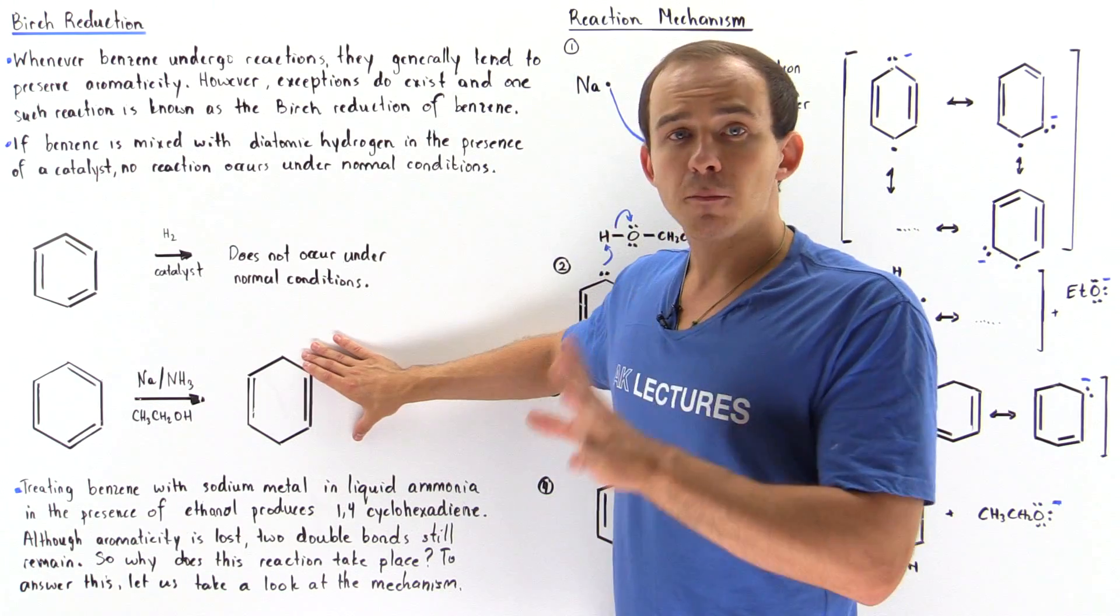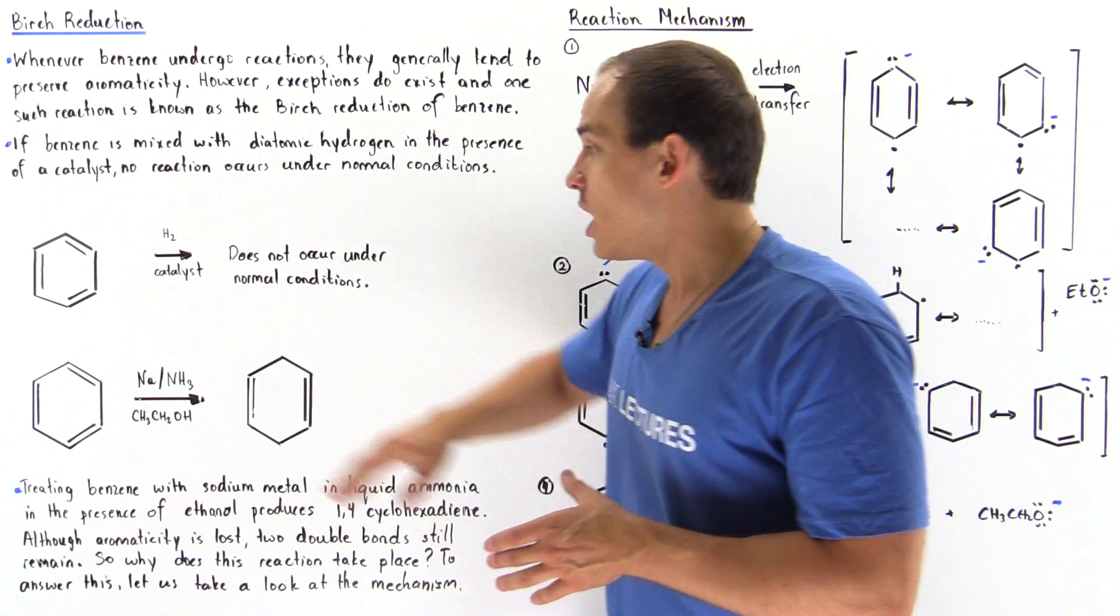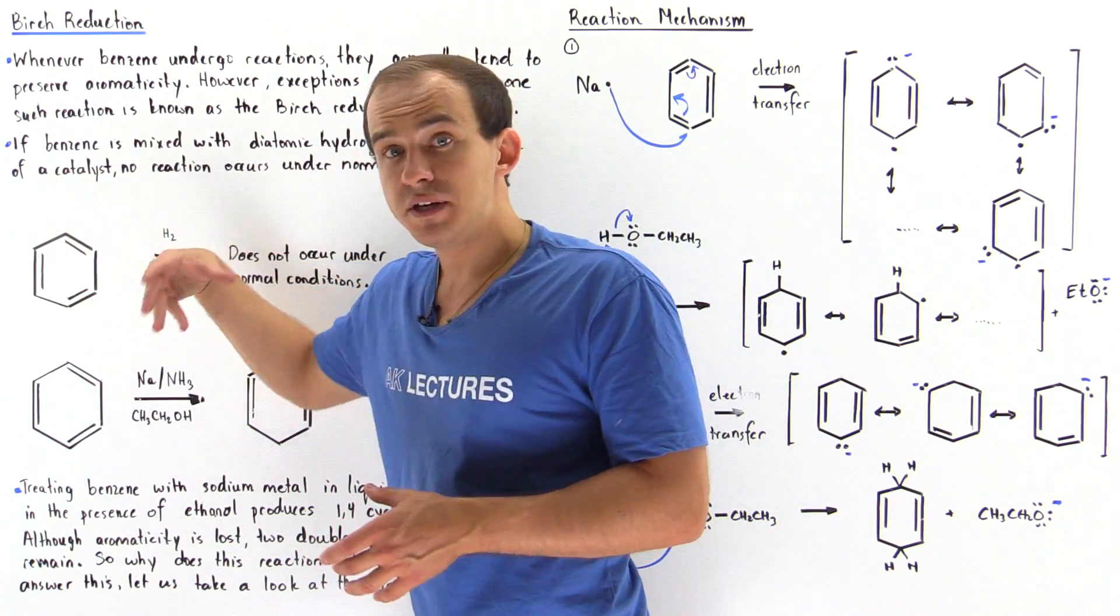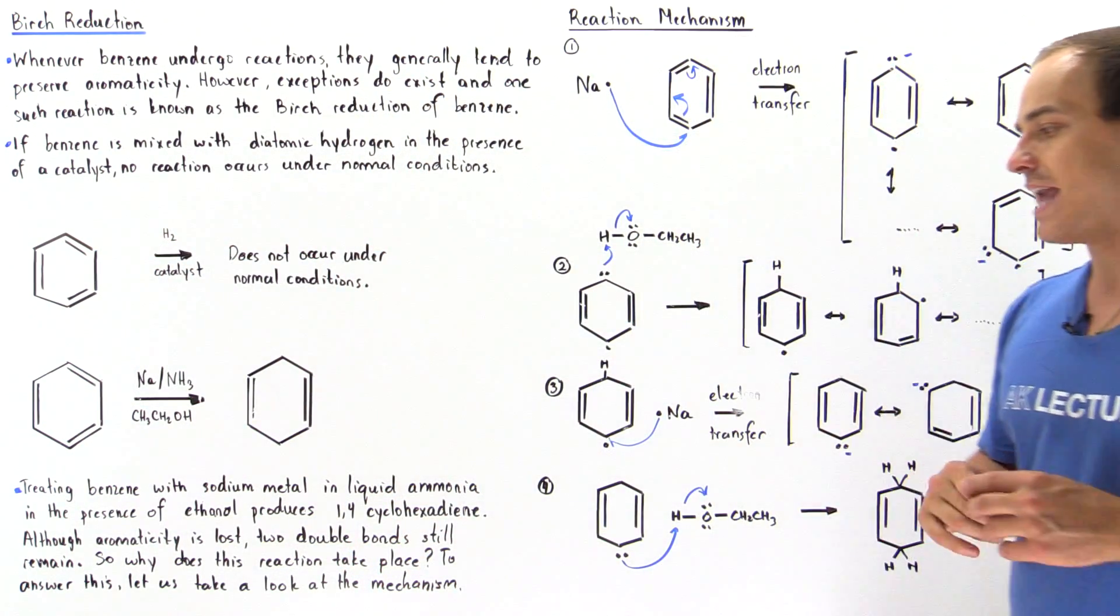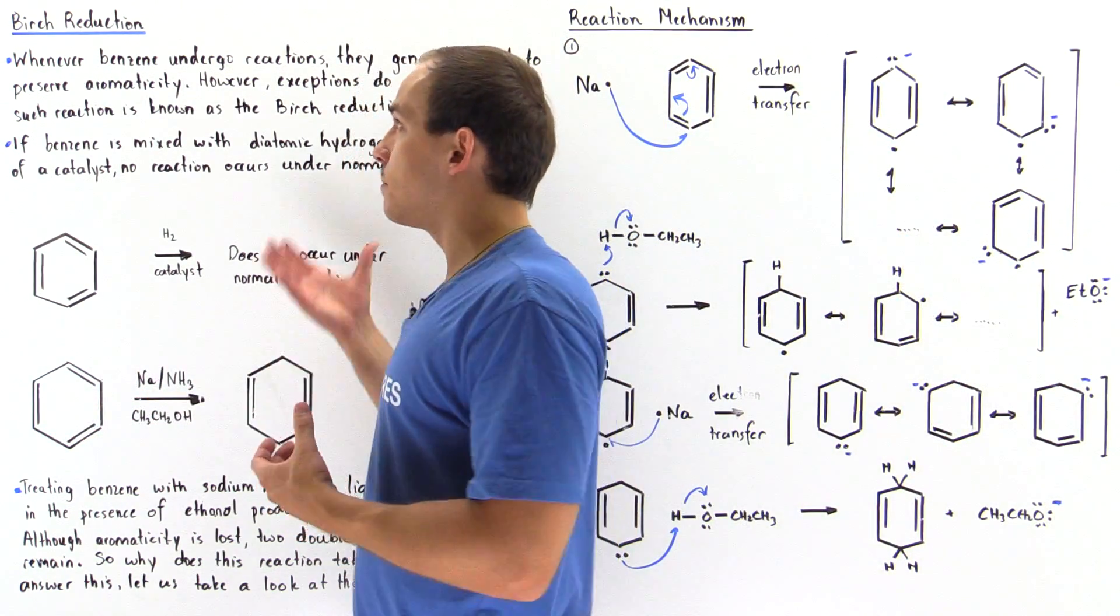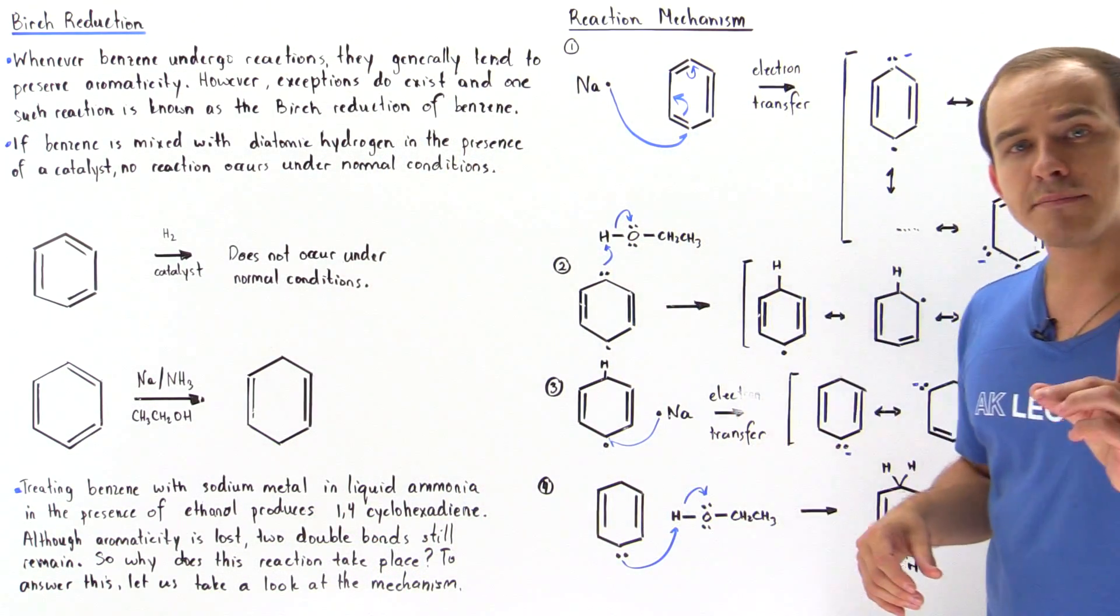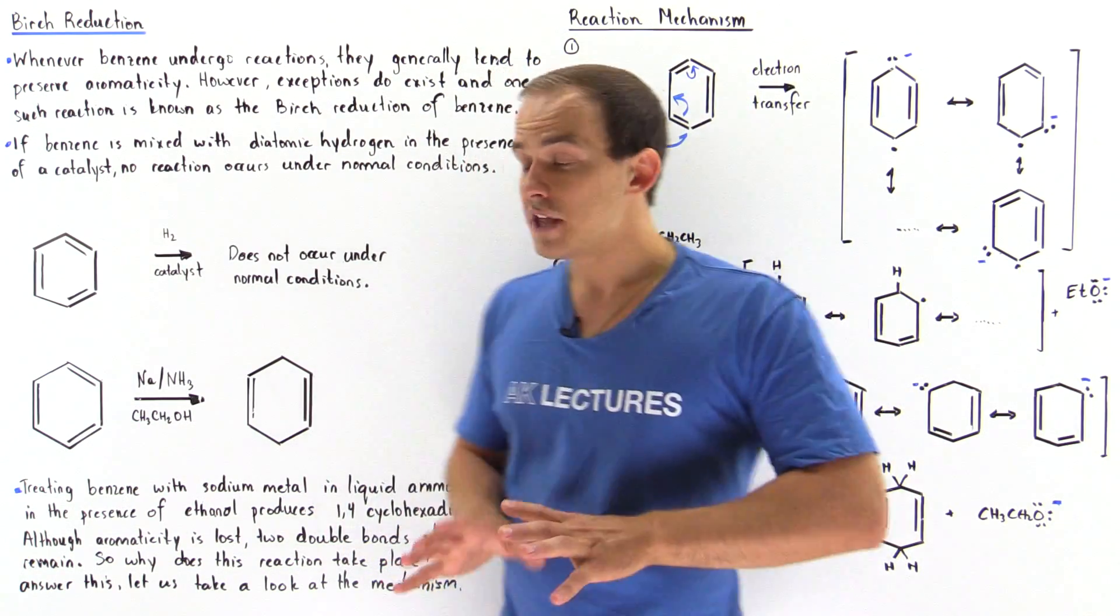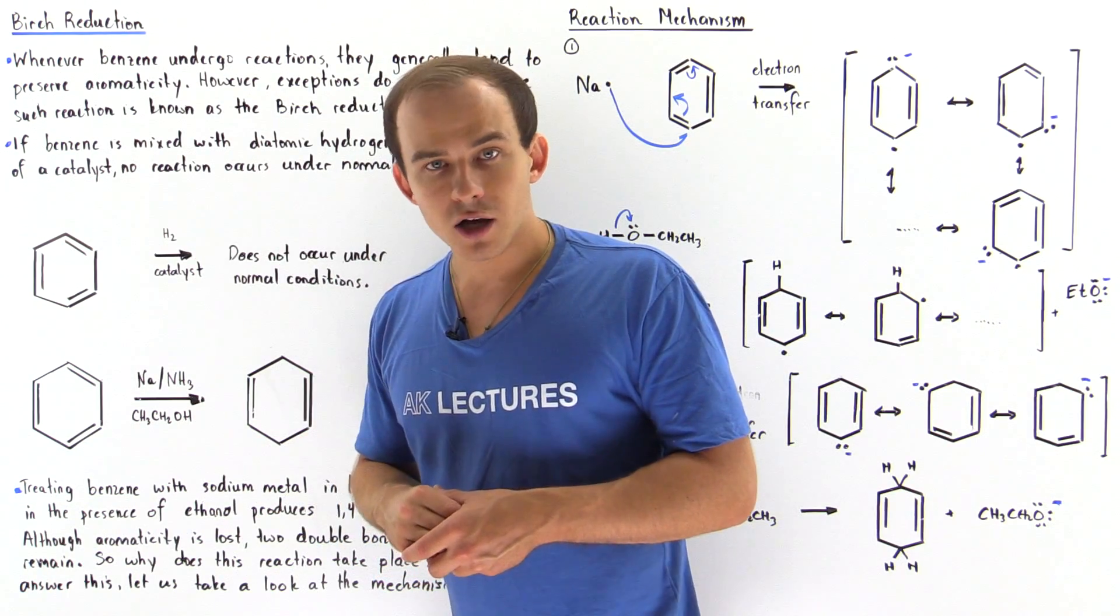We only really get rid of one pi bond. Although aromaticity is, in fact, lost, we still have our two pi bonds, versus in this case, all the pi bonds would be lost if this reaction were to actually take place. Now, to actually answer why this reaction, the Birch reduction reaction, takes place, we must examine the reaction mechanism and the intermediates involved in the reaction mechanism of the Birch reduction.